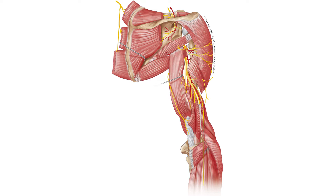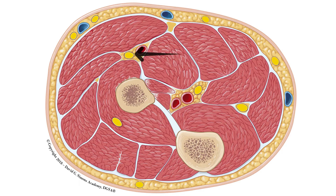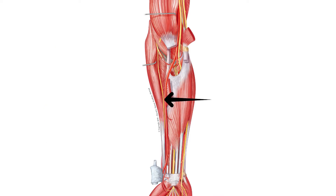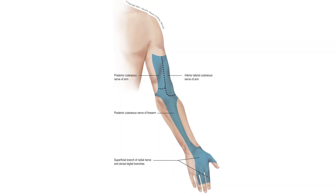It remains posterior to the brachialis muscle, but anterior to the humerus. It divides at the level of the elbow into two branches: the sensory or superficial branch and the motor or deep branch. The sensory branch passes between the brachioradialis muscle and travels straight down, covered by the brachioradialis muscle, towards the back of the hand, where it innervates the dorsal aspect of the thumb, the index and middle finger.